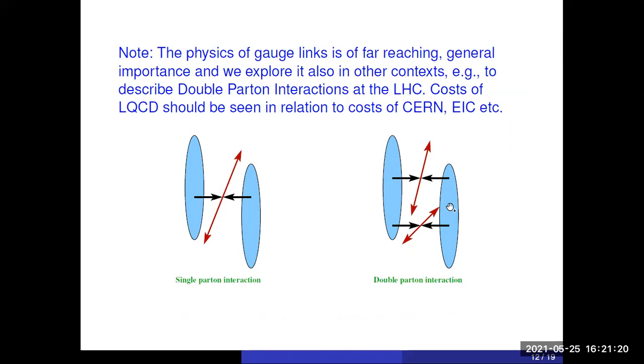And then it will enter all kinds of physics, for example, also at CERN. If you collide protons at this very high energy of the LHC, then you get a substantial fraction of events where you have two hard QCD events in the same proton-proton collision, which introduce a transverse distance. And again, you get all the richness of this gauge-link physics.